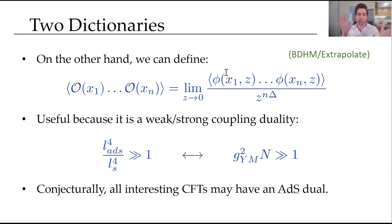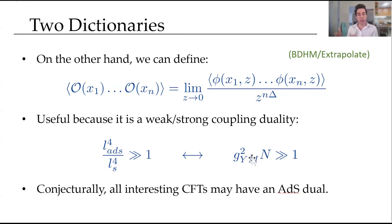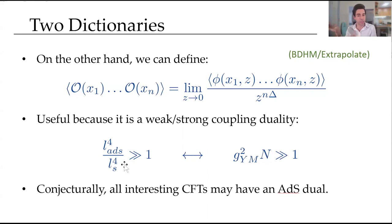Sometimes this duality isn't useful in a calculational sense because computing the partition function on either side is equally difficult. But what makes ADS-CFT useful is the fact that it's a weak-strong coupling duality. The 't Hooft coupling was taken large, meaning the gauge theory is at strong coupling, but correspondingly the string length scale is very small, so curvatures are very small and the gravity theory in the bulk is weakly coupled. This weak-strong duality is really the powerful thing: you can study strongly coupled CFTs by studying weakly coupled semi-classical gravity with some fields on a fixed background.